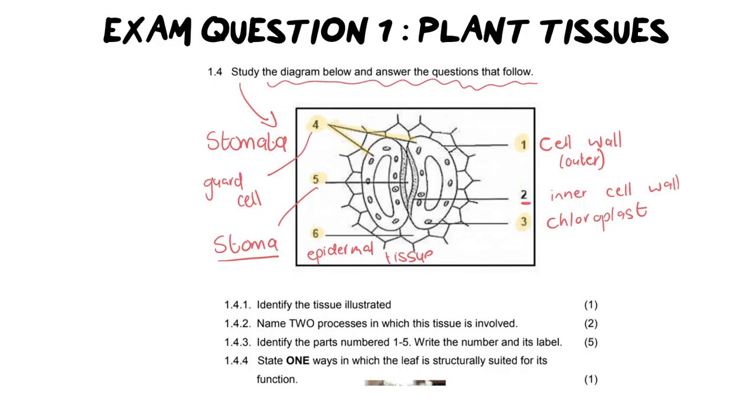Now that we have labeled everything, let's go through the questions and use what we have prepared. Number one says, identify the tissue illustrated. So you need to tell me what kind of tissue this whole picture represents. It's a collective, right? Because remember, it says the tissue. The stomata is a part of the epidermal tissue. So this is epidermal tissue with a stoma or a stomata. That's what you need to identify. Yes, it's only for one mark, and you're writing a very short sentence, but that's what you need to provide.